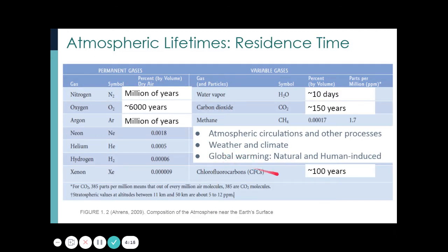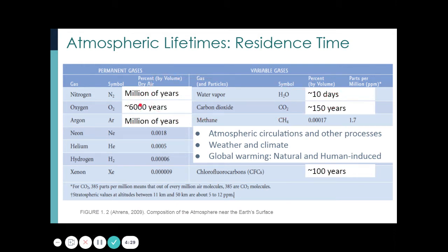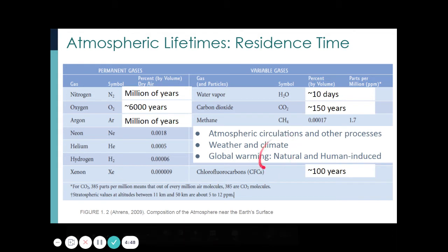The residence times of greenhouse gases are shorter compared to permanent gases. Any changes in permanent gases don't really affect our atmosphere, but changes in variable gases such as water vapor, carbon dioxide, methane, and CFCs will greatly affect our weather and climate system.